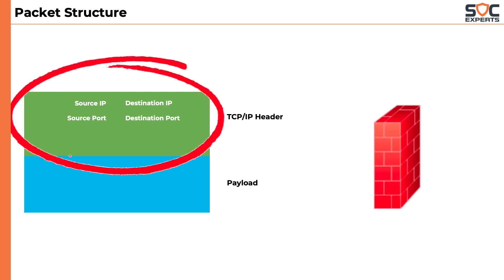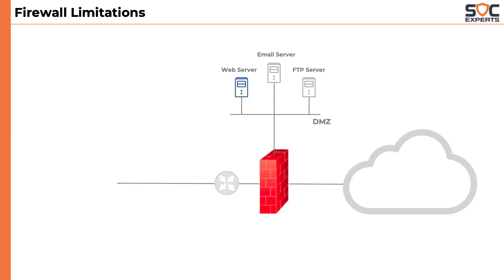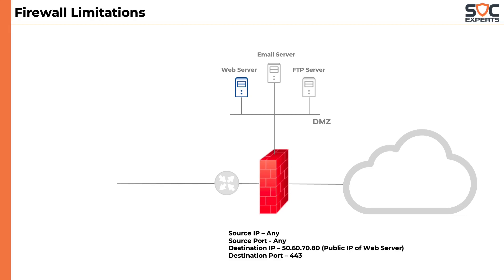Now consider this scenario. We have a web server hosting our e-commerce website. Obviously, everyone on the internet should be able to visit our website. So we will write the rule on the firewall like: source IP address equals any, source port equals any, destination IP address equals 50.60.70.80 (the public IP of our web server), and destination port equals 443 which is HTTPS — and the firewall should allow this traffic.